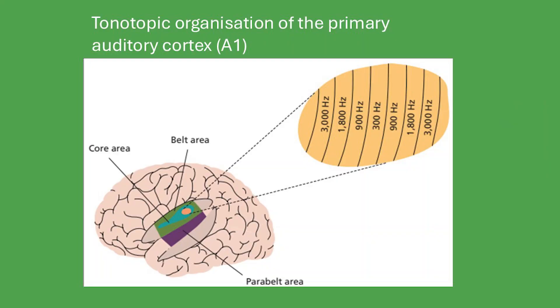The primary auditory cortex is the first cortical processing station for information coming from the cochlea in the ears. It is found in a region called Heschl's gyrus in both the left and right hemispheres, in the upper part of the temporal lobes. The primary auditory cortex contains a tonotopic representation — neurons respond preferentially to different frequencies of sound — and we know this from brain imaging studies such as fMRI as well as single-cell recordings from humans and other primates.